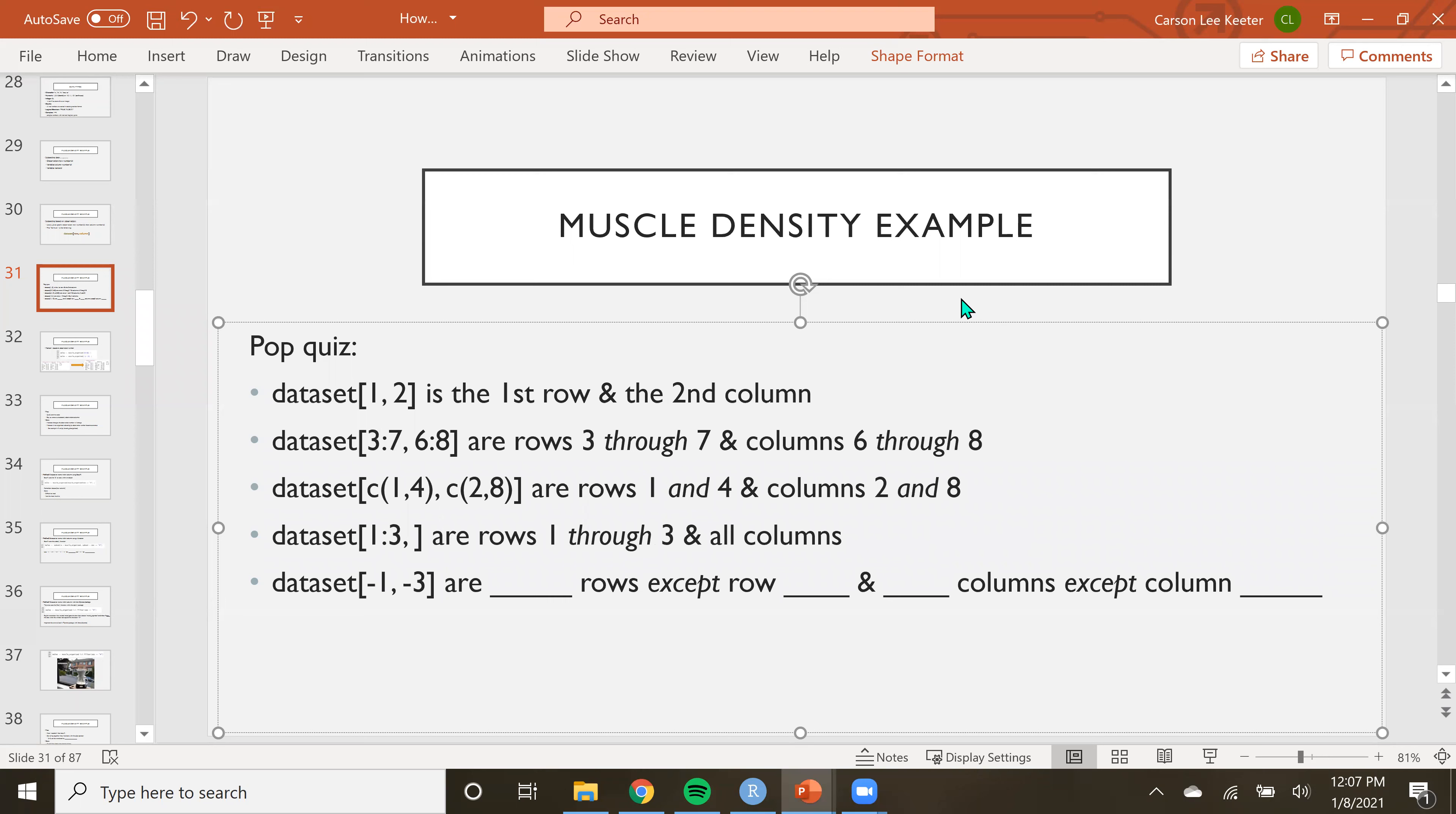If we leave that blank, it's going to grab all the columns, not none of the columns, because that wouldn't be anything. It would be all of the columns. So if we leave that blank, then it's all of the columns. If we were to switch this around, leave the first one blank, the first before the comma blank, and then put one through three in the column spot, we would grab all of the rows and only columns one through three.